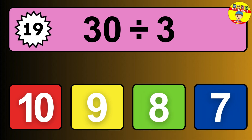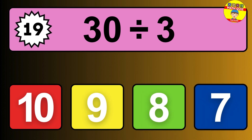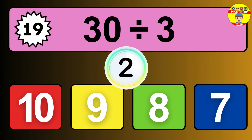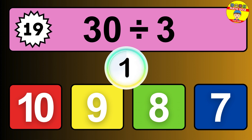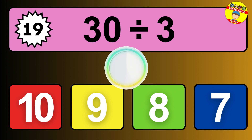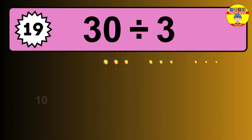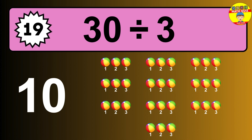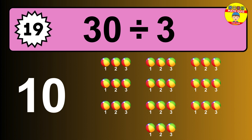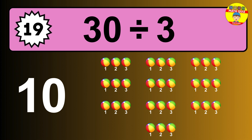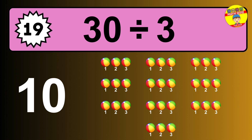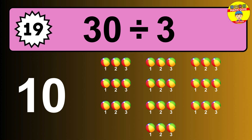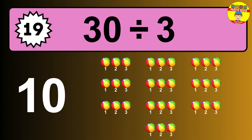30 divided by 3 is... time to think. Let's go to the solution. Divide the number 30 by 3. Each group contains 3 units. So dividing 30 by 3 results in 10 equal groups. Thus, the result is... 30 divided by 3 equals 10.